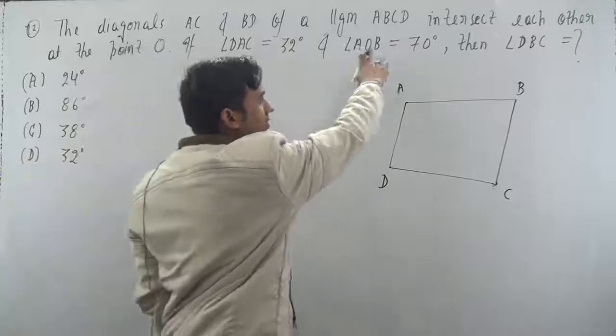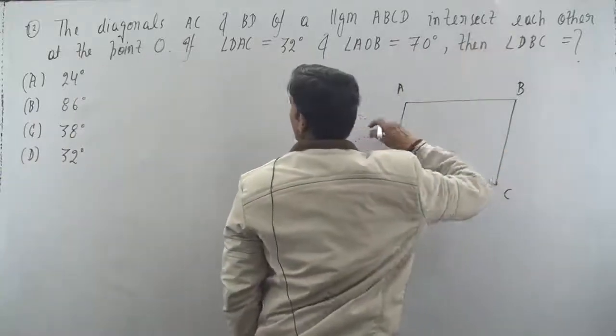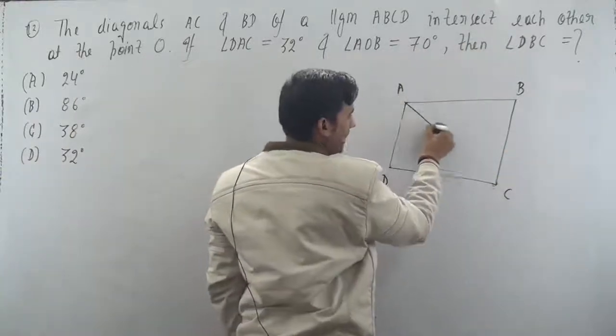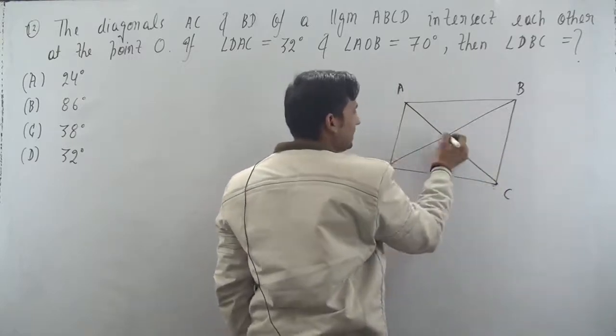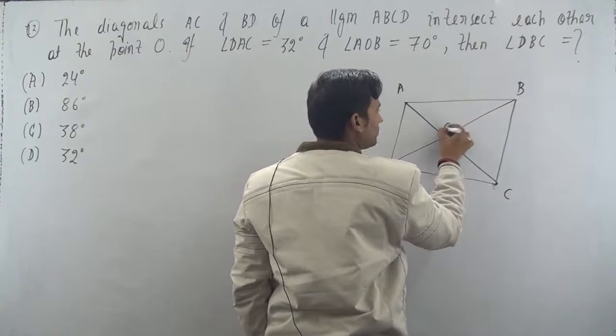So the diagonals AC and BD of parallelogram ABCD intersect each other at point O. So this is diagonal AC and this is diagonal BD. They intersect each other at point O, at this point. Correct.